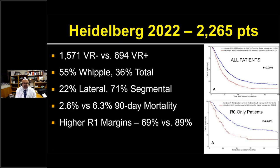The most recent largest single-institution study to date from Heidelberg included almost 700 venous resections with a matched comparator of almost 1,600 non-venous resections, a combination of Whipples and totals. Majority were segmental resections. They found significantly worse 90-day mortality with venous resections and a significantly high margin-positive rate in both groups. Venous resection was associated with worse survival even among R0-only patients; however, they did meet the threshold of a two-year survival with an R0 resection with venous resection.